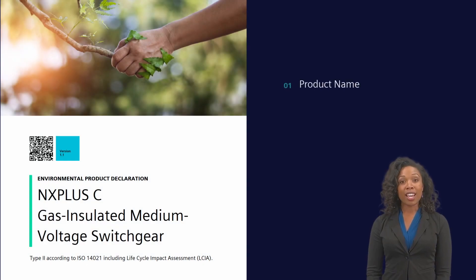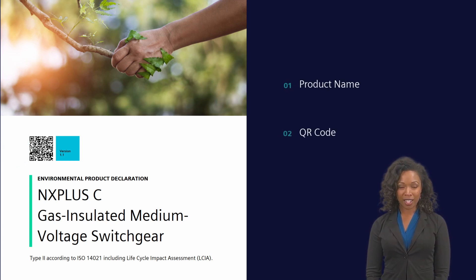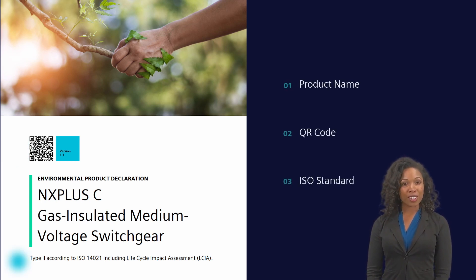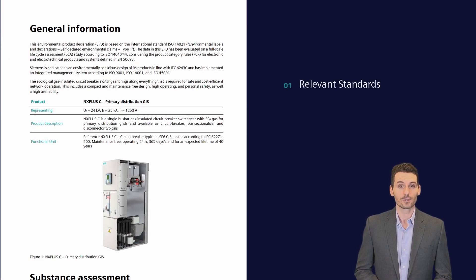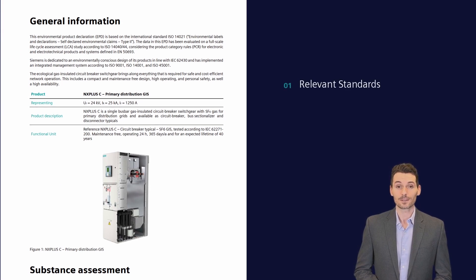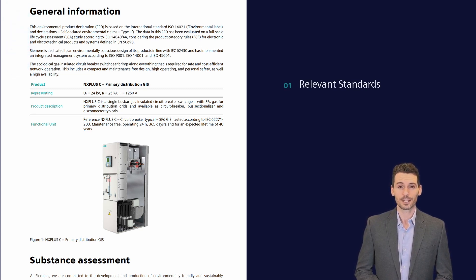On the cover page, you will see not only the product name and QR code to the product's webpage, but you will also see the ISO standard under which the EPD was produced. All published standards used when creating this EPD are found in the General Information section and assure the accuracy of the statements.